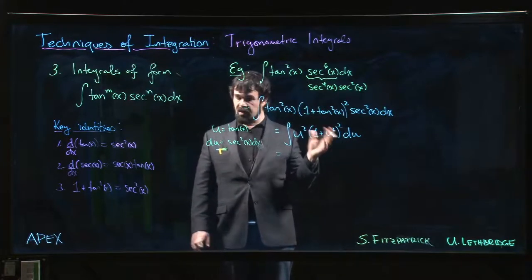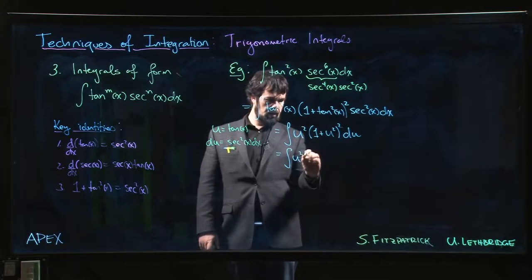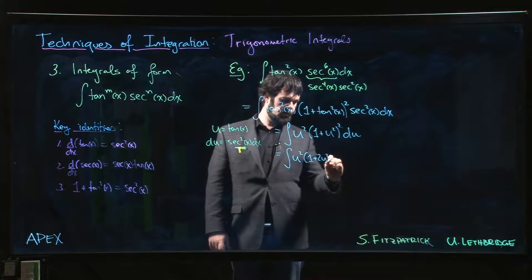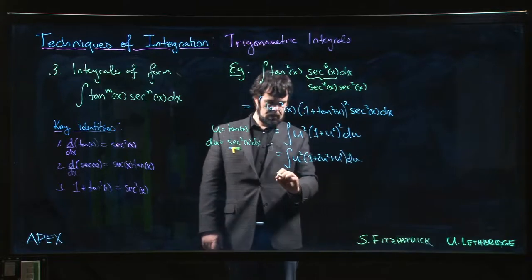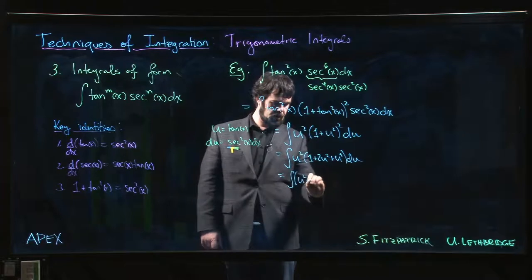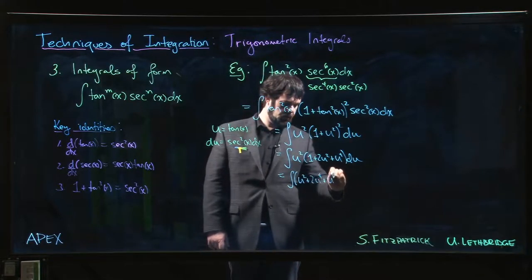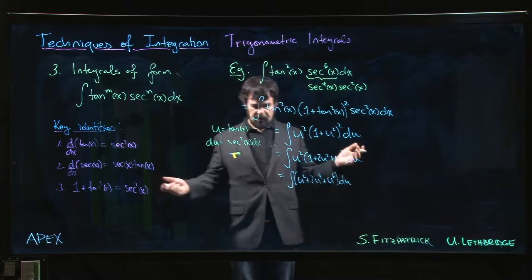And like with the sine and cosine ones, the easiest way to deal with this is typically to multiply everything out. So u squared times 1 plus 2 u squared plus u to the fourth. Multiply the u squared through: u squared plus 2 u to the fourth plus u to the sixth. Now we can simply integrate term by term.